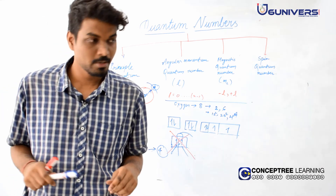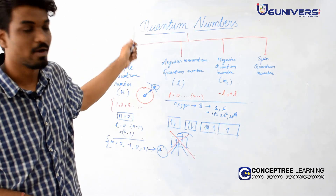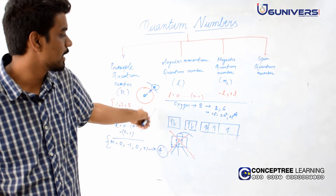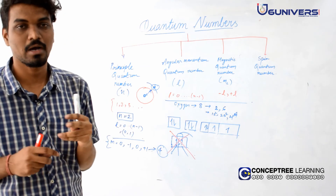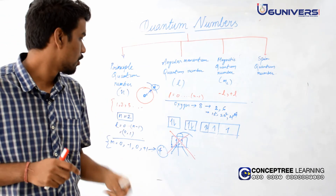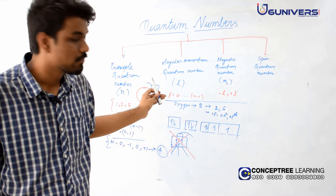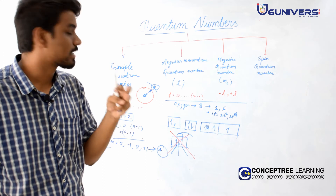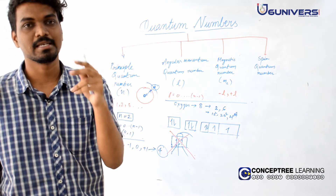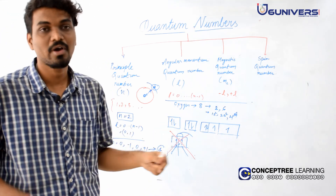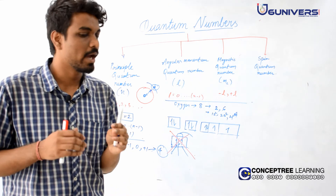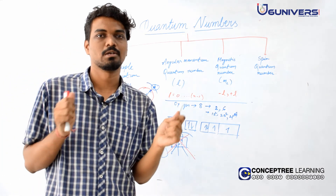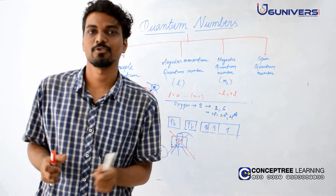In this video, we have learned about quantum numbers and how to write an electronic configuration of an atom. We have answered a few basic questions: why can't 3 electrons be present in a single orbital, and why can't 2 electrons have the same set of quantum numbers. Thank you.